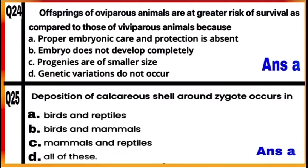Question 24: Offspring of oviparous animals are at greater risk of survival compared to those of viviparous animals. Oviparous animals are egg-laying animals like reptiles and birds; in these animals, the fertilized eggs are covered by a hard calcareous shell and laid in a safe place, and after the incubation period, the young ones hatch out. But in viviparous animals, they give birth to young ones. Because of proper embryonic care and protection in viviparous animals, chances of offspring survival are greater. So the correct answer is A — due to absence of proper embryonic care and protection in oviparous animals, their offspring are at greater risk.